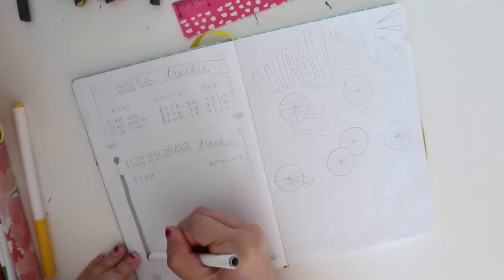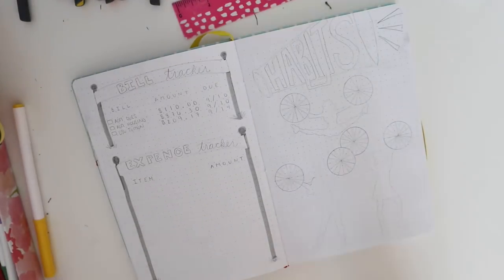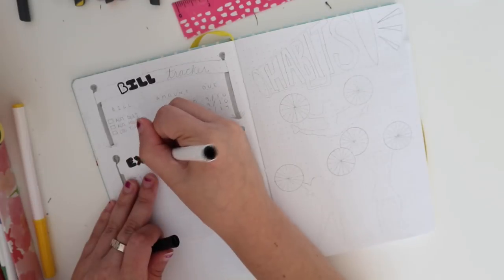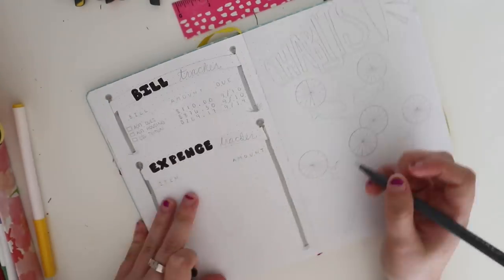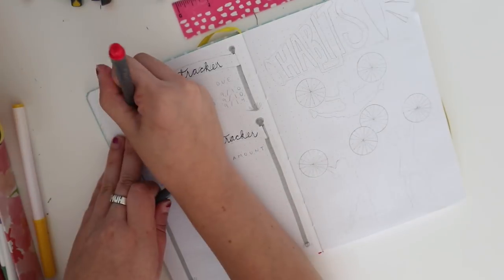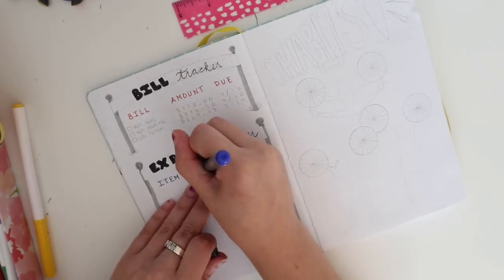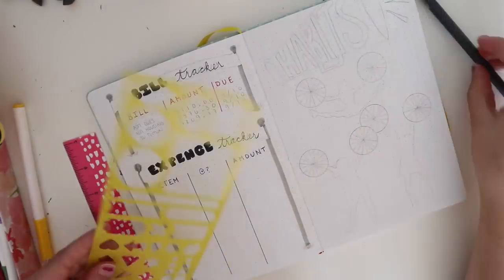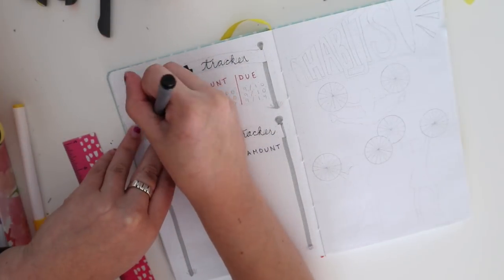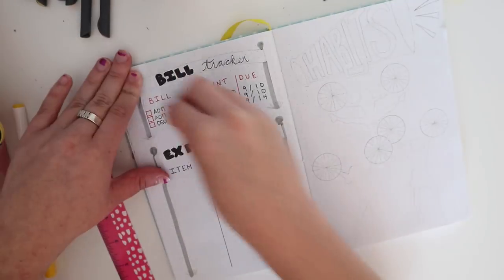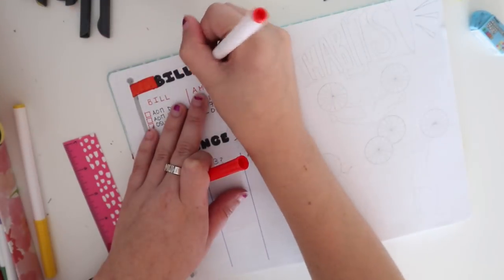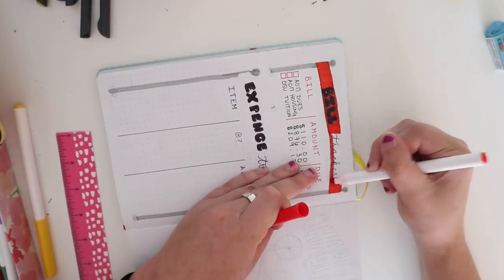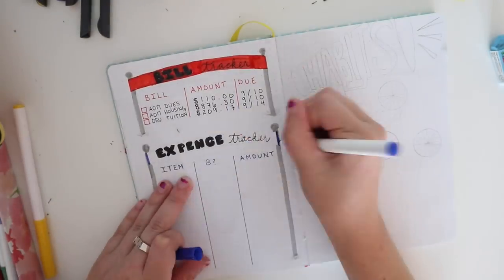The next page is my bills and expense trackers. At the top I do have my bills and I did put little boxes on the left hand side that way I can mark off once all of those bills are paid. On the bottom I do have columns for the items, where they're bought at, and how much those items were, that way I can keep track of what I'm buying, when I'm buying, and how much I'm spending. These pages are very simple just for me to stay organized and keep track of my finances this month, but I did have them follow the sports theme and have each header turn into a little banner.